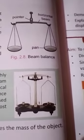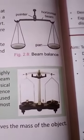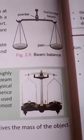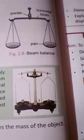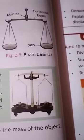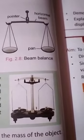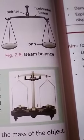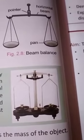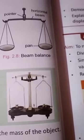A beam balance consists of a horizontal metallic beam with a support and a pointer at its center, and the beam can move freely about the support. Two similar pans are suspended equidistant from the center of the beam.